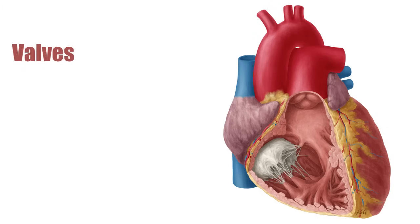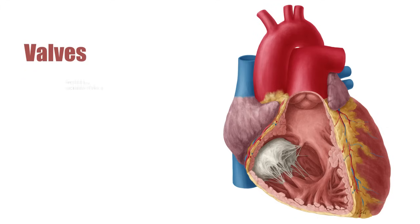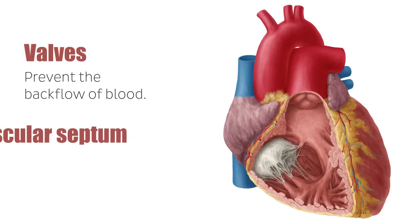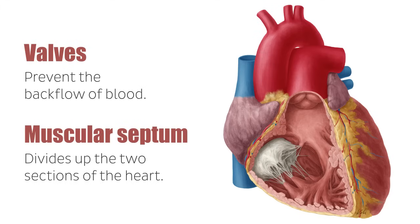The valves in the heart prevent the backflow of blood into the chambers of the heart. The muscular septum divides up the two sections of the heart, creating a left and right side, each containing one atrium and one ventricle. The right side of the heart pumps deoxygenated blood, and the left side pumps oxygenated blood.